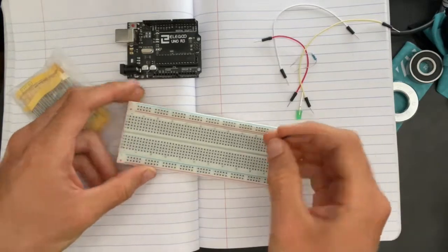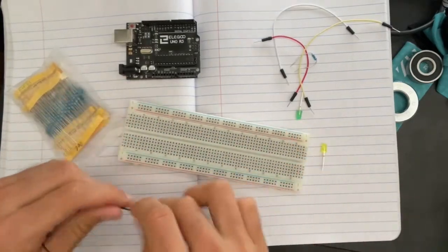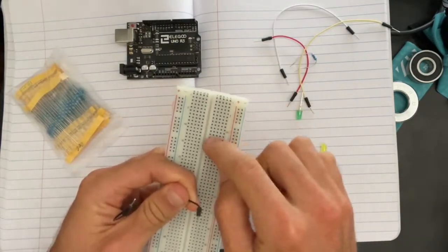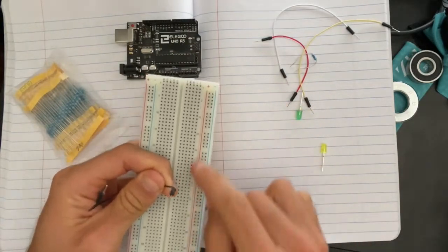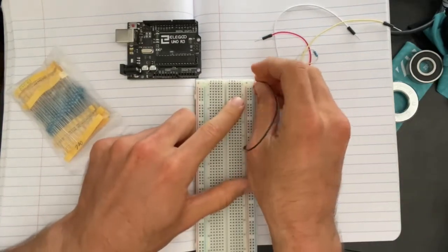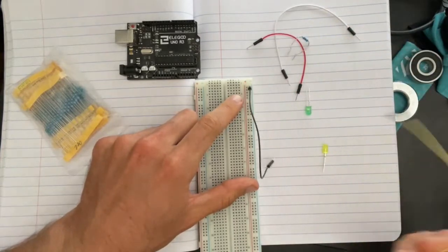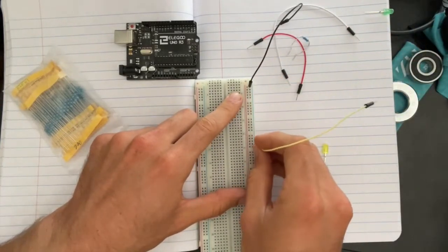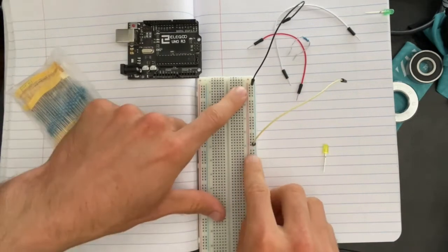What happens along these breadboards is that you've got these two outer columns of connections and you've got these inner rows. Everything along these two outer columns is connected together. So if I was to plug one wire right here and plug another wire, I've got a black wire anywhere along this column right here will be connected together very quickly and easily.